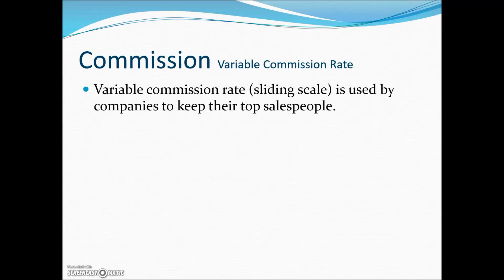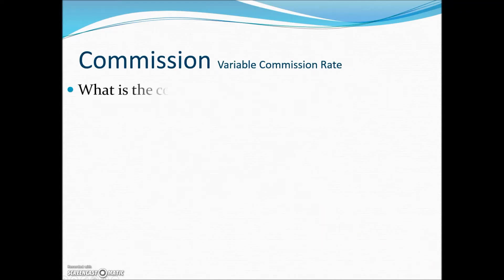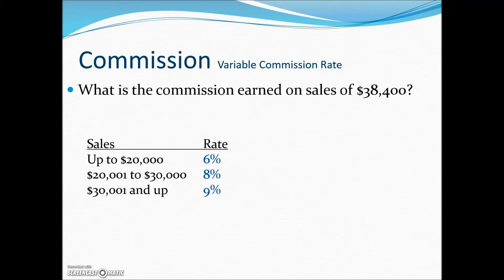The sliding scale or variable commission is a method of pay designed to retain top-producing salespeople. Under such a plan, a higher rate of commission is paid as sales get larger. For the first $20,000 in sales, the rate is 6%. The next $10,000 — anything over $20,000 up to $30,000 — is at 8%, and anything over $30,000 is at a 9% commission rate. Let's calculate the commission on $38,400 in sales.